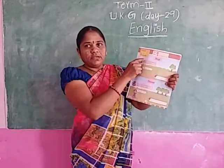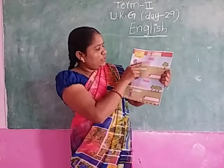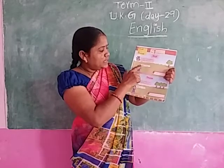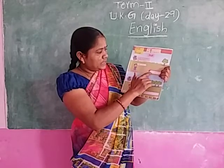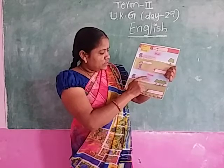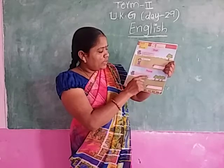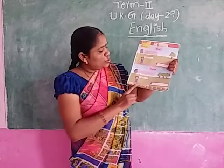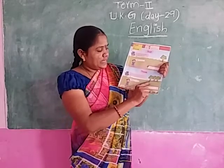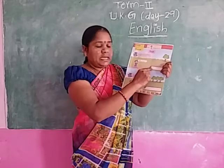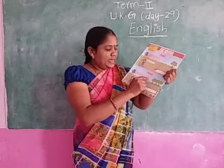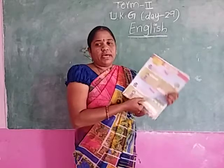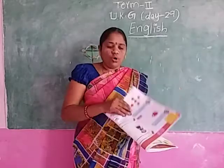That and those. To point to one person or thing, use 'that.' That is a tree. To point to more than one person or thing, use 'those.' Those are trees. T-H-A-T, that. T-H-O-S-E, those.